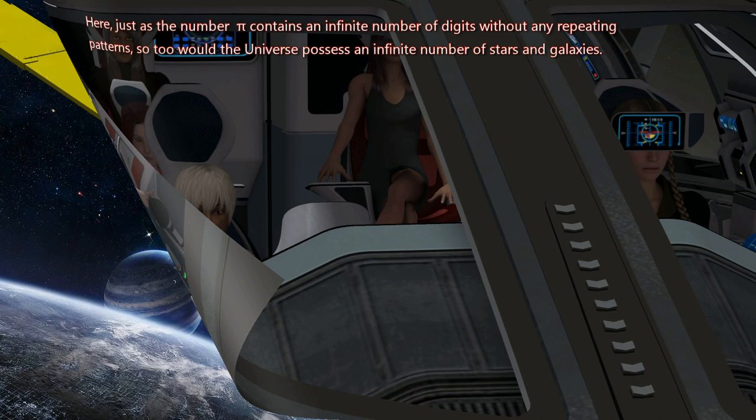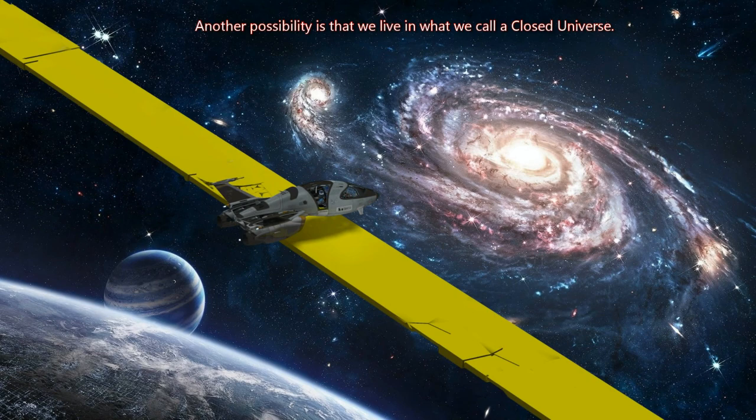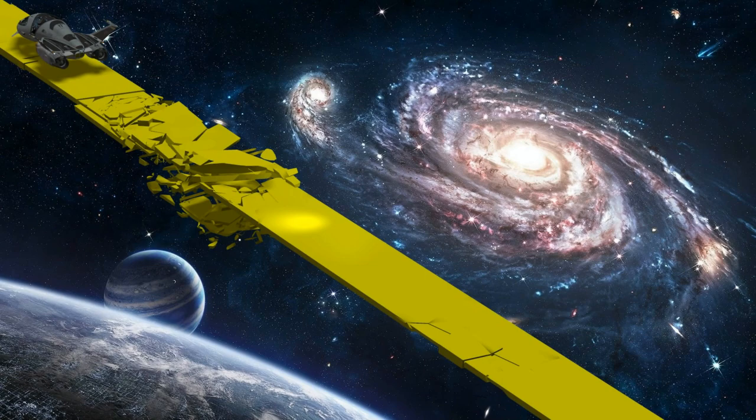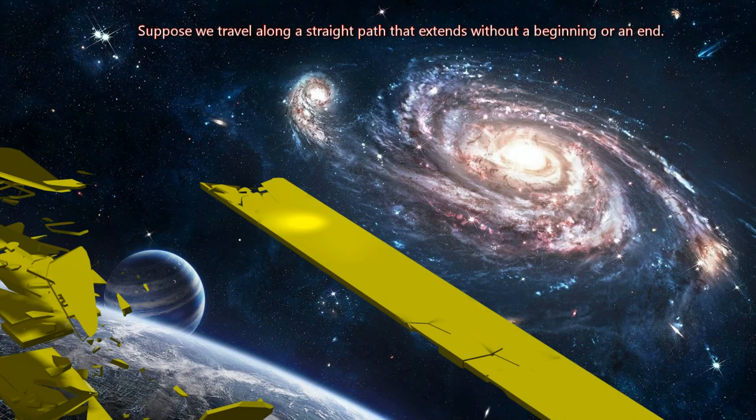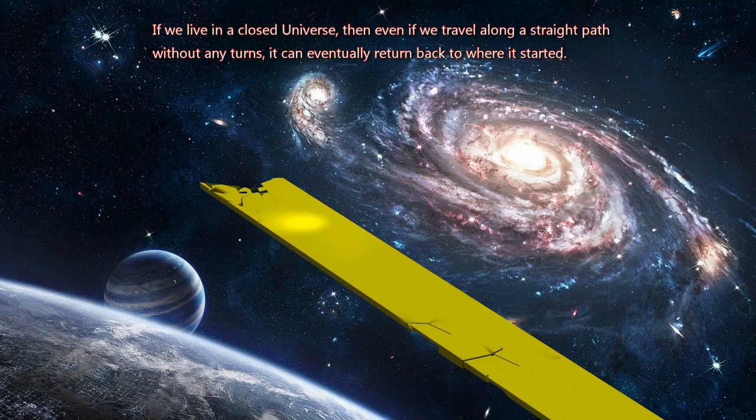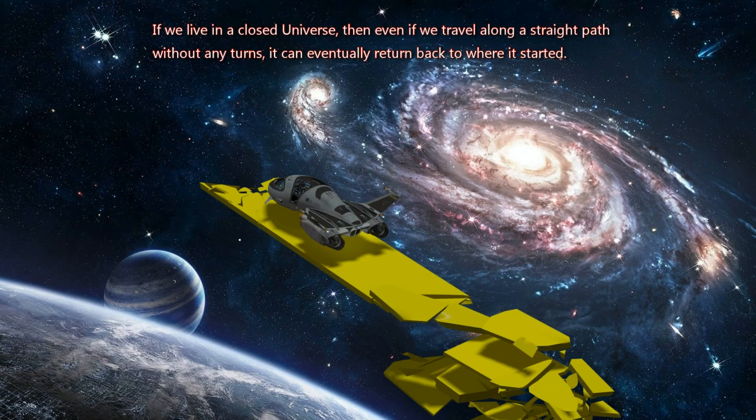Another possibility is that we live in what we call a closed Universe. Suppose we travel along a straight path that extends without a beginning or an end. If we live in a closed Universe, then even if we travel along a straight path without any turns, it can eventually return back to where it started.